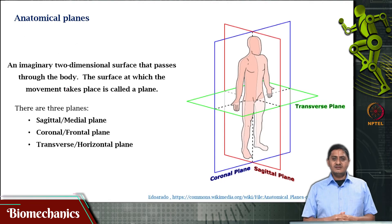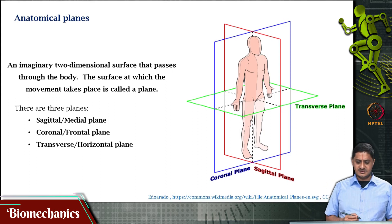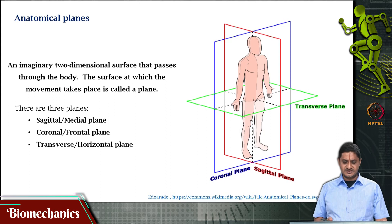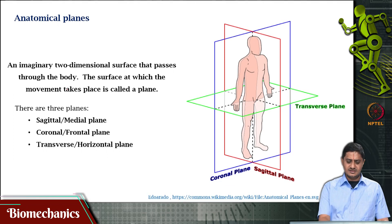What are these anatomical planes? An anatomical plane is an imaginary 2D surface that passes through the body. This surface within which movements are taking place is called the plane.